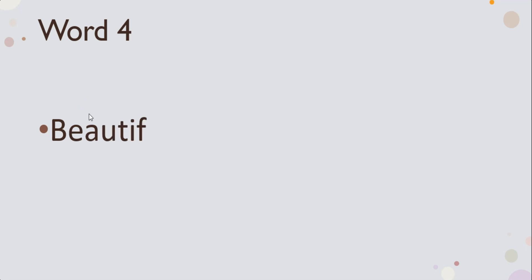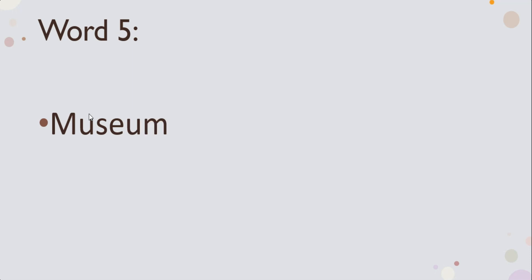Fourth word is beautiful — khubsurat. Fifth and final word is museum — ajayib ghar. Give yourself five out of five if there is no error. If there is one error — one letter is missing — then still give yourself half a mark for each word. So one mark for each word and half a mark for one letter missing.